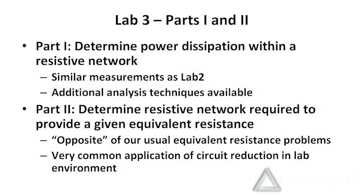In part one, we're determining power dissipation within a resistive network again. In part two, we are finding resistive networks required to give an equivalent resistance. This is the inverse of our usual homework problem in which we're given a resistive network and want to find an equivalent resistance — here we're given a desired equivalent resistance and need to determine a network that provides it. Note that these solutions are not necessarily unique; there could be any number of resistive networks that provide the desired resistance. These kinds of problems are very common in circuit design.